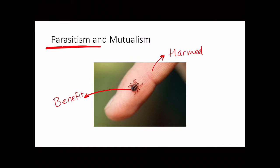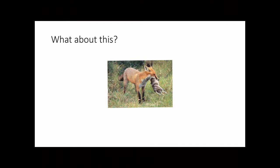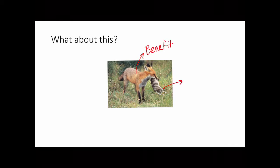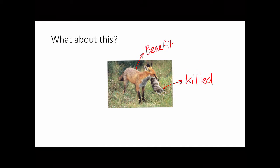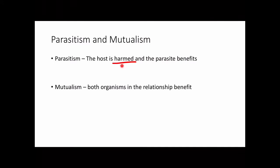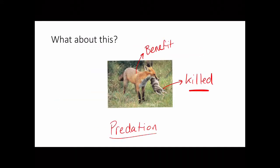So the tick and human example is parasitism. For the last example, we have a fox eating a rabbit or possum. The fox benefits by getting a food source, but the prey animal is actually killed — not just harmed. Because it's killed and not harmed, this can't be parasitism, and it's definitely not mutualism. This is an example of predation. This highlights the key point: parasitism means harmed but not killed — if the organism is killed, it's predation.